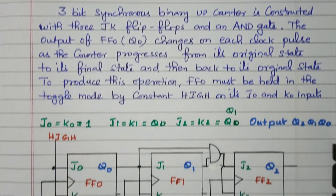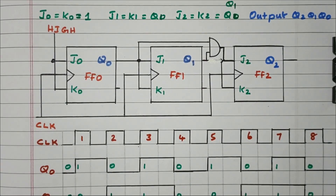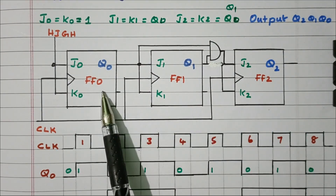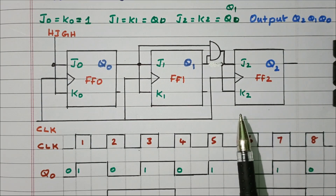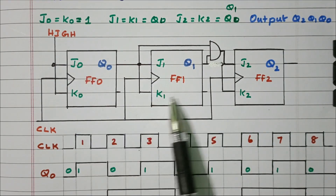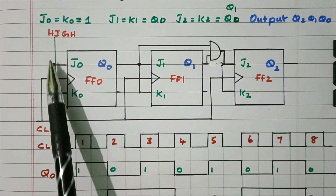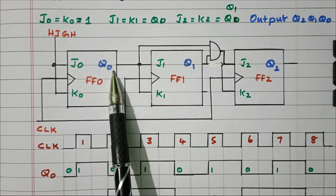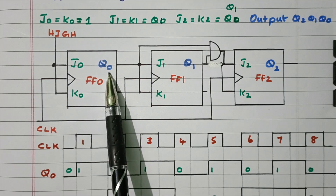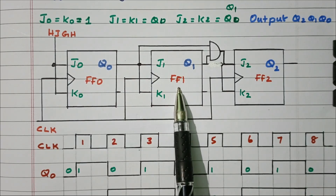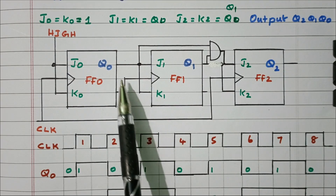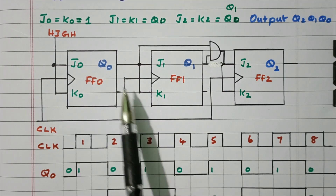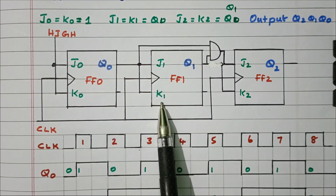Now we will see the logic diagram. It is a 3-bit counter, so 3 flip-flops are available: flip-flop 1, 2, and 3, with inputs J0, K0, J1, K1, J2, K2. The first flip-flop receives logic high on both inputs, so every clock pulse the output toggles continuously.